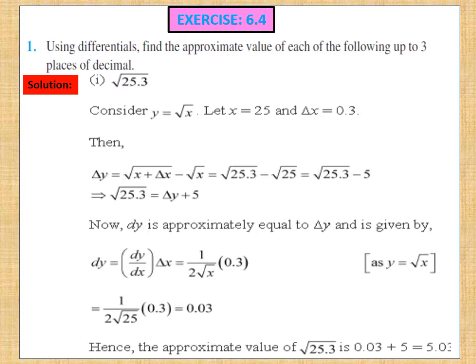The approximate value of delta y is dy. By definition, dy = (dy/dx) × delta x. Since y = √x, dy/dx = 1/(2√x). So dy = (1/(2√x)) × delta x = (1/(2√25)) × 0.3 = (1/(2×5)) × 0.3 = 0.03. Putting this value in: √25.3 = delta y + 5 = 0.03 + 5 = 5.03. So the approximate value of √25.3 is 5.03.